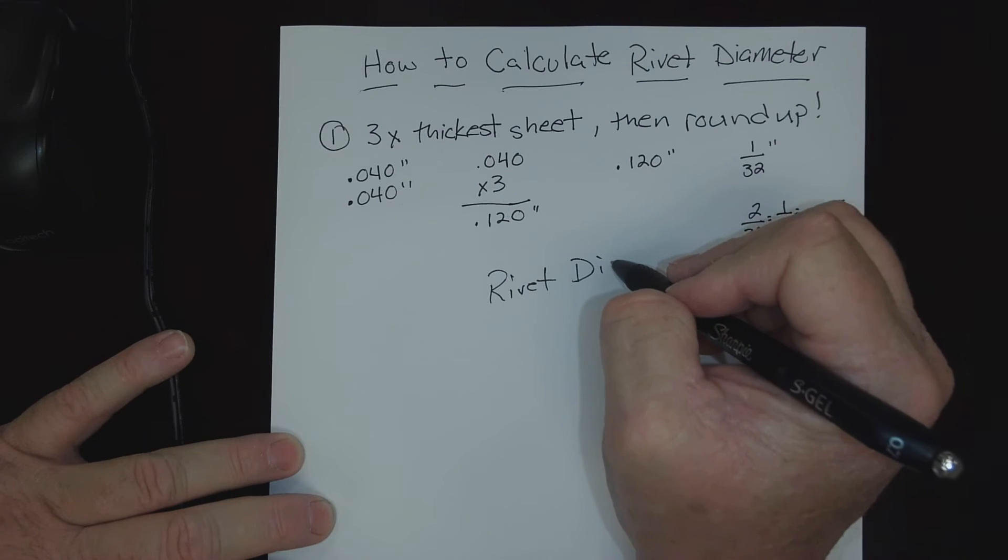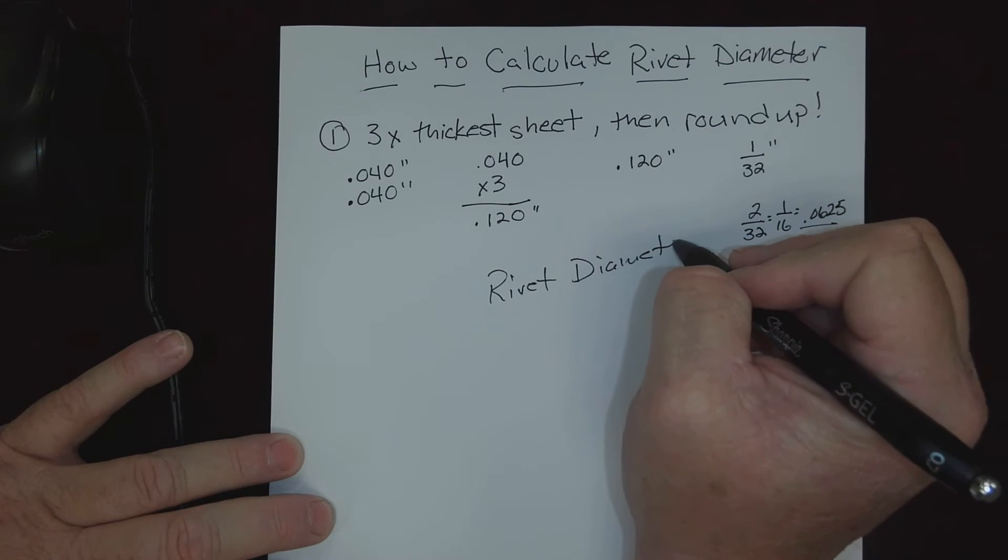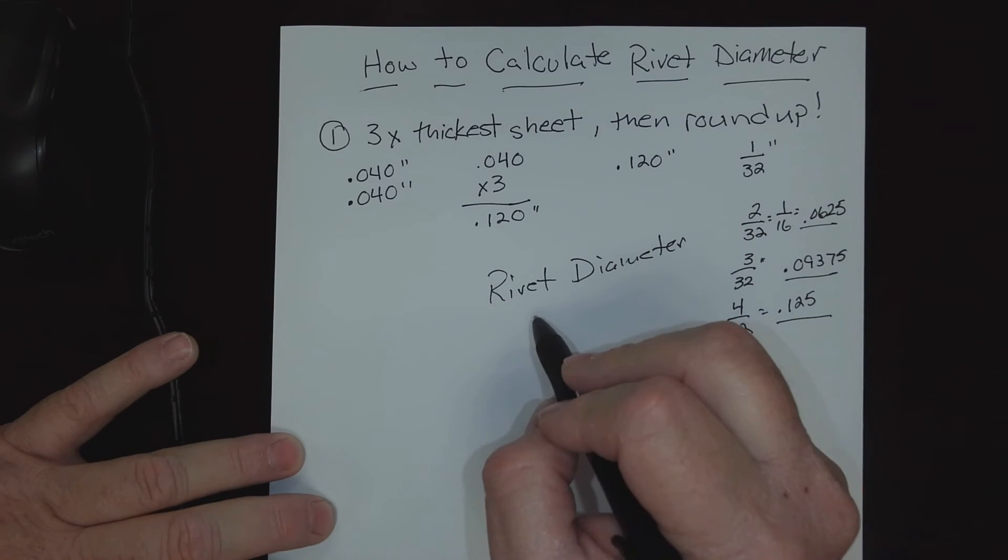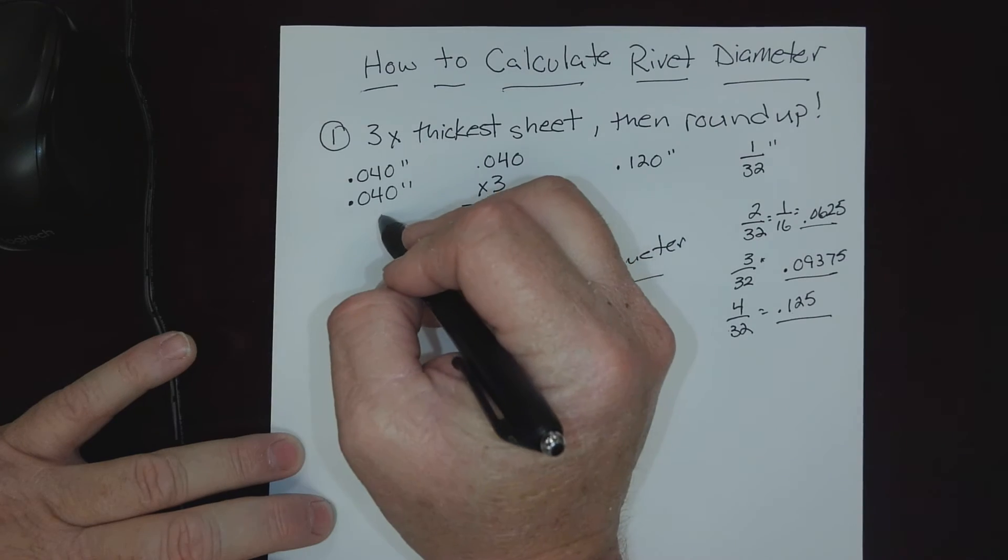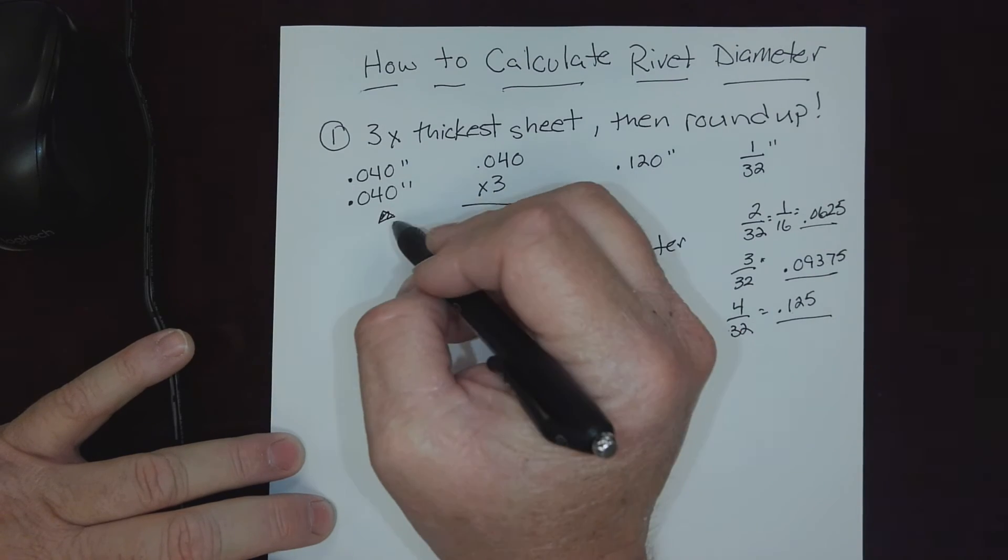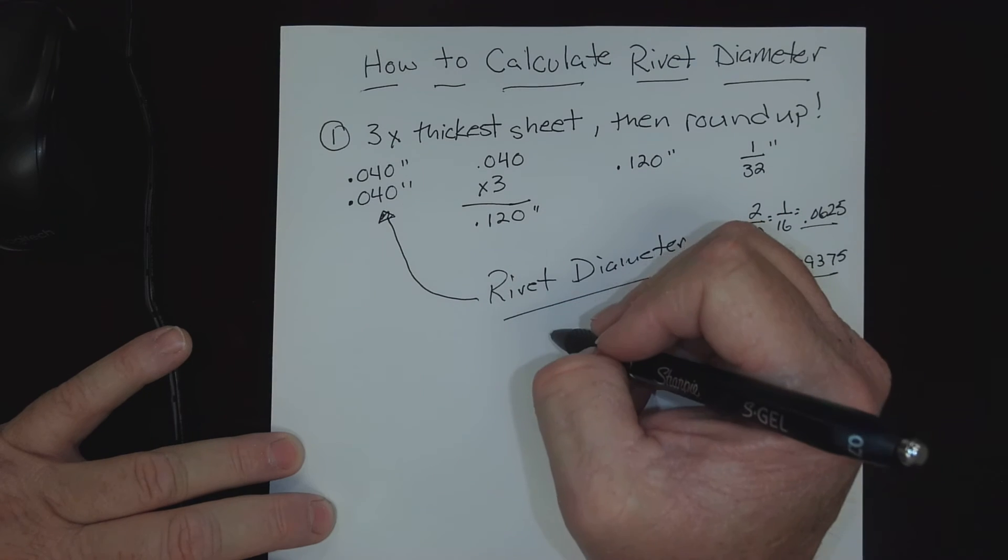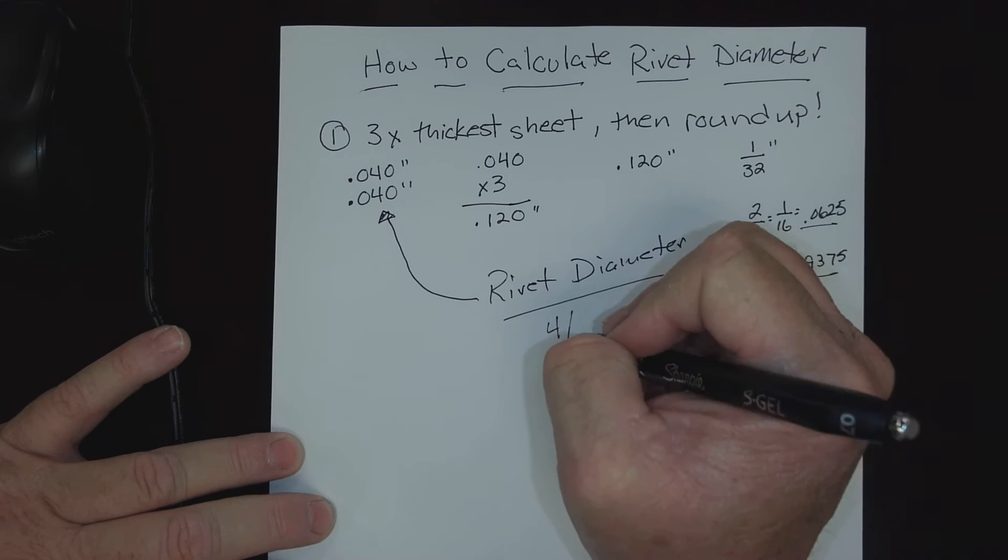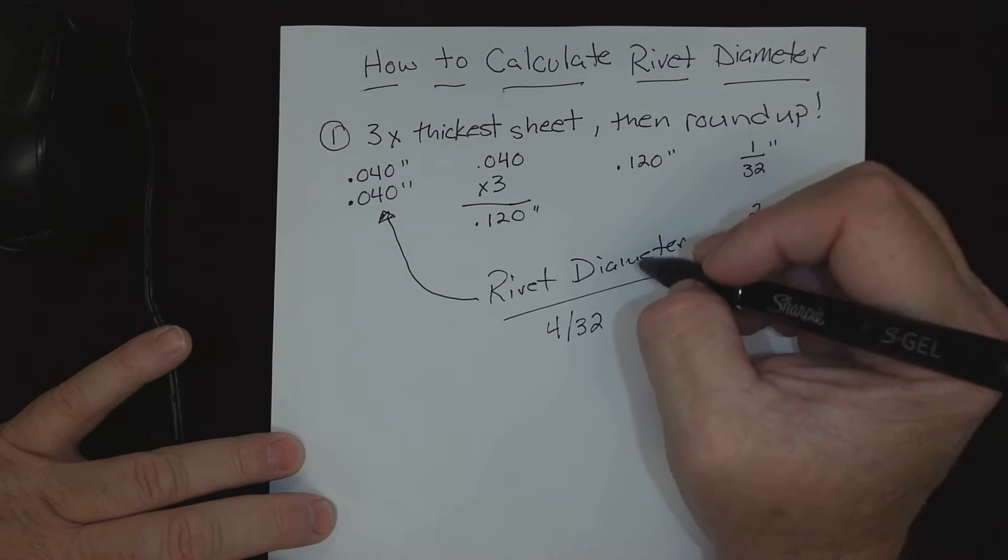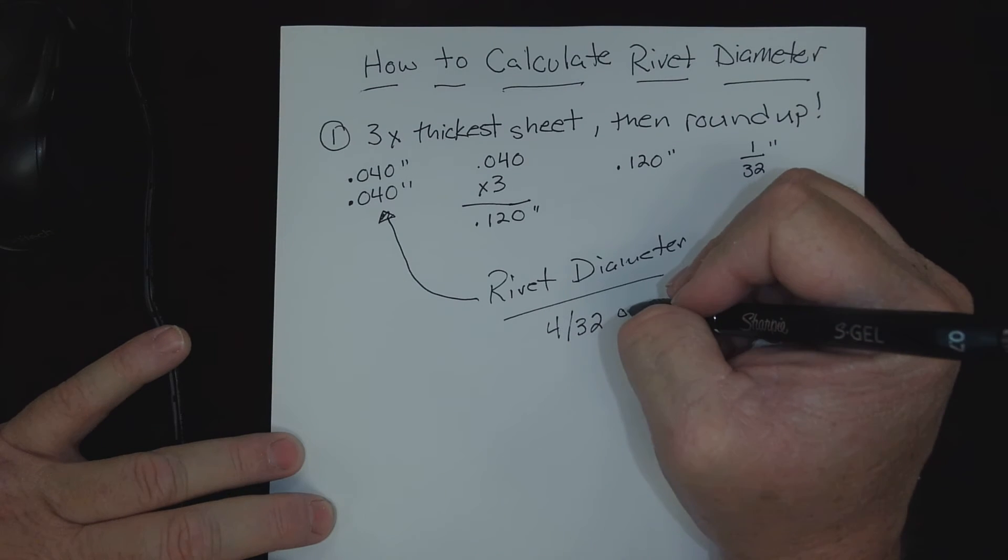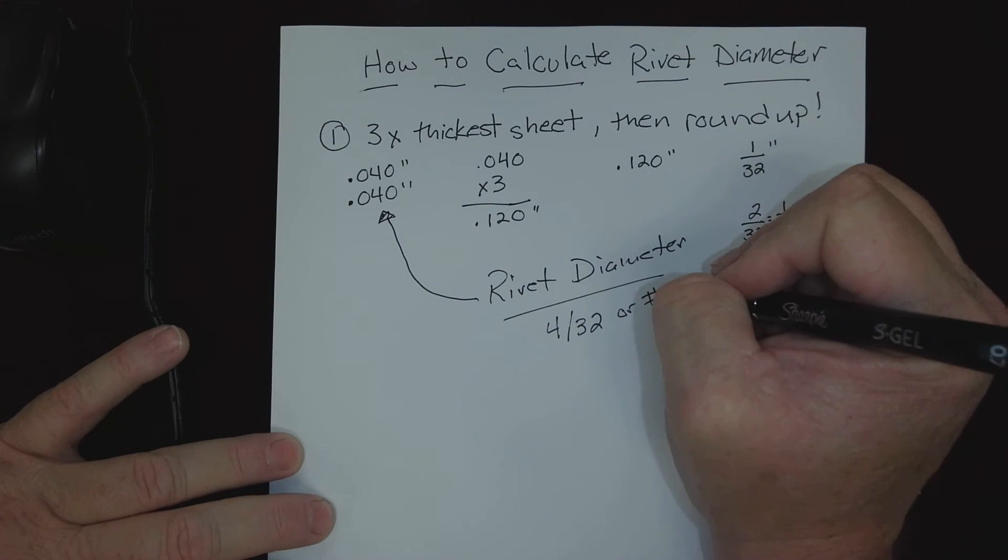And like I said, always in thirty-seconds. Our proper rivet diameter for these particular stack-ups would be four thirty-seconds, or we could simply say a number four rivet.